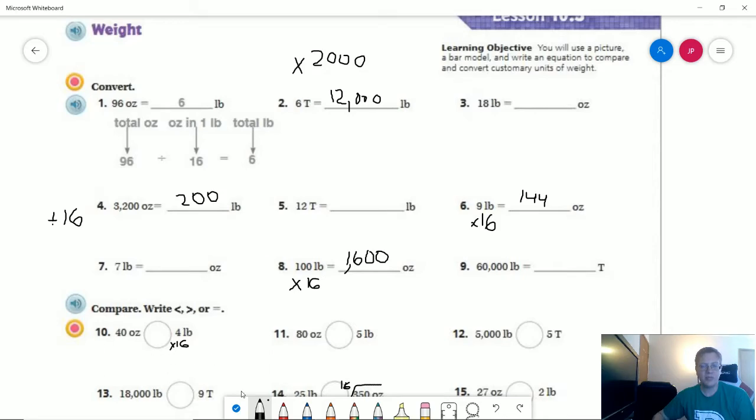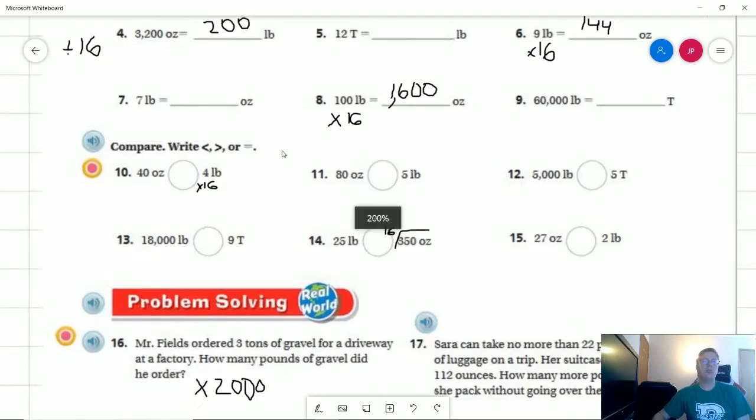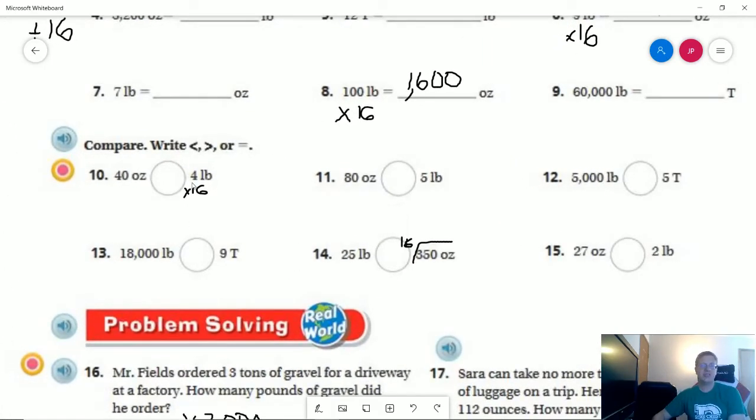For number 10, we are working with comparisons. One of the easier things that I would suggest is we don't have to exactly figure out the right answer. If it was 10 ounces to a pound we would be equal, but it's going to be 16 ounces, so this side here is going to have to be worth more than this side here, so we're going to use less than.